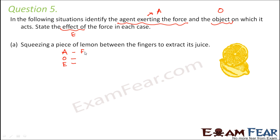So here, who is the agent who is exerting force? Agent is finger because fingers are exerting force on the lemon, which is the object. Object is, of course, the lemon because the force is being exerted on the lemon. And what is the effect of it? The effect is that there is a change in shape because the lemon gets squeezed.